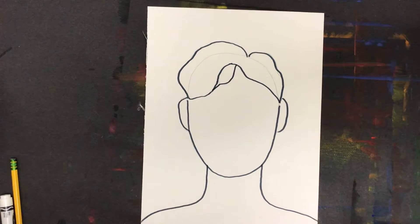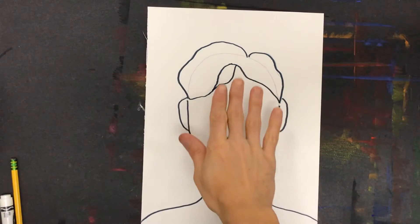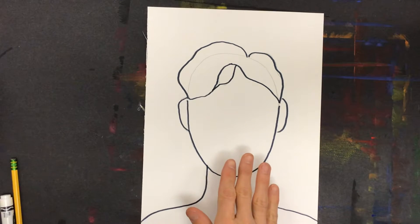What I'm going to do now is visualize lines that would be going across the contours of this person's face.